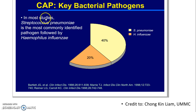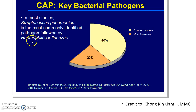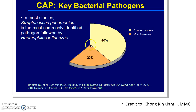When talking about community-acquired pneumonia, the key bacterial pathogens involved are: most commonly Streptococcus pneumoniae, which is a gram-positive organism, followed by Haemophilus influenzae, which is a gram-negative organism. Streptococcus pneumoniae accounts for about 40% of cases, and Haemophilus influenzae for about 20% of cases.